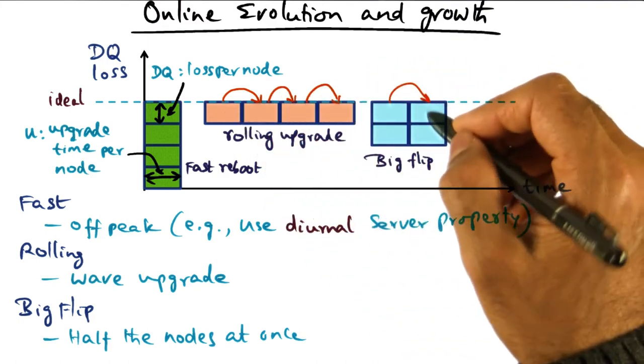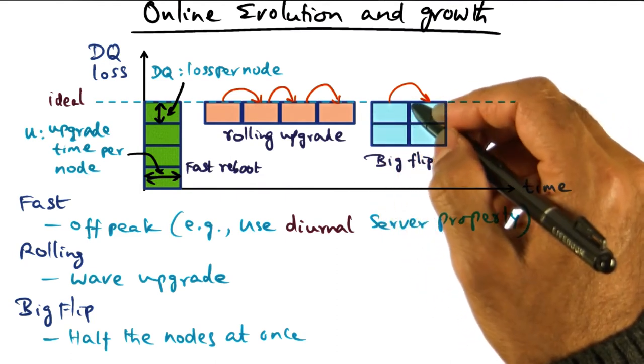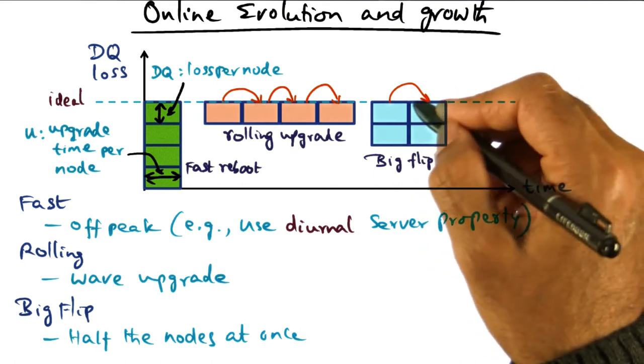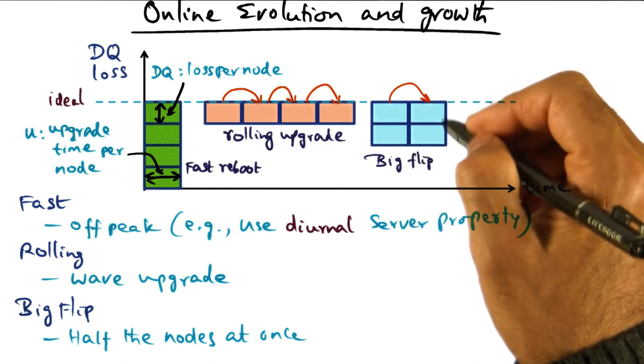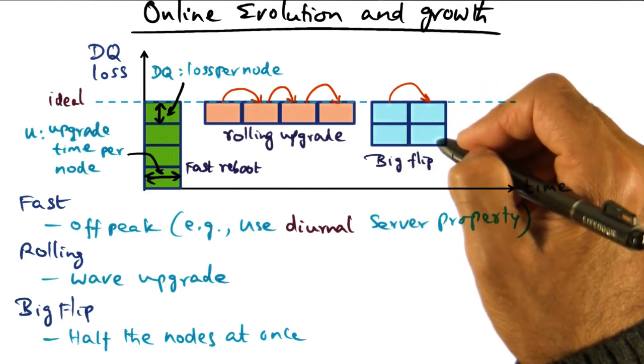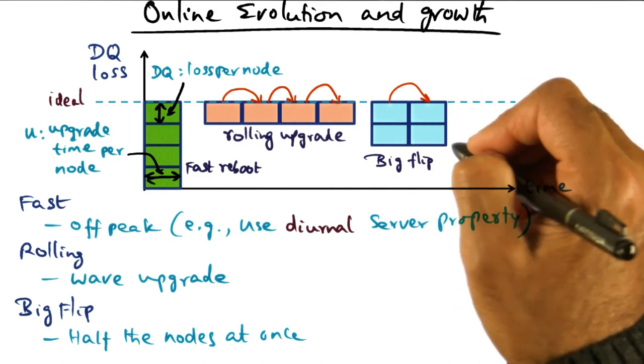And the extreme of that rolling upgrade is this big flip, where we're saying, we'll bring down 50% of the nodes, upgrade them, and then turn them back on, and then do the upgrade for the remaining 50%. So in the third case, in the big flip, the service is always available, but at 50% capacity for a certain duration of time.